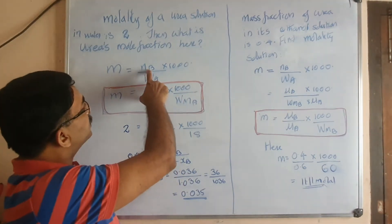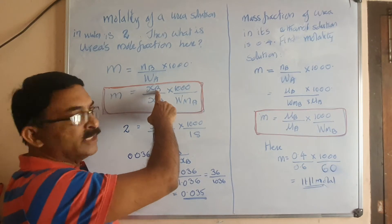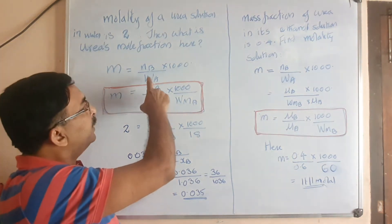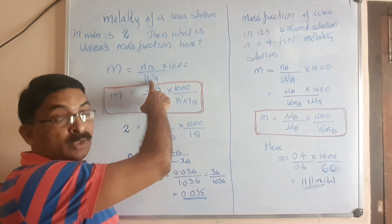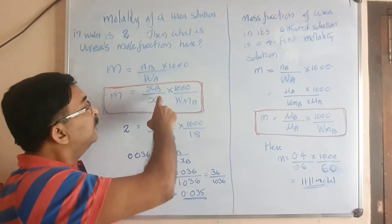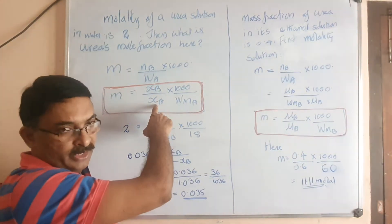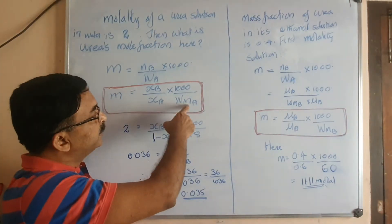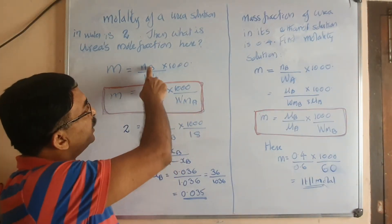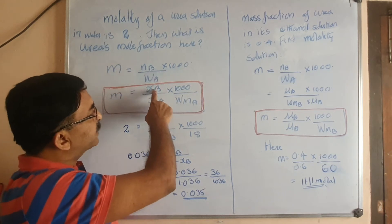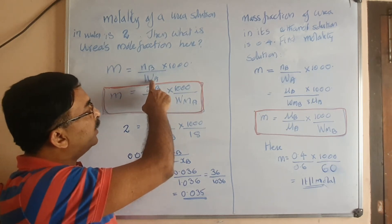So in the place of nb we can use xb, but in the denominator we want mass of solvent. xa is the number of moles of solute to solvent here, and multiplying by its molecular mass gives you the mass. So mb is replaced by xb and wa, that is the mass of the medium, is replaced by xa times wma.